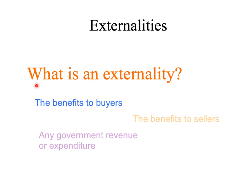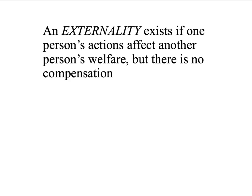In particular, we're going to talk about what an externality actually is. Here is our definition: an externality exists if one person's actions affect another person's welfare, but there is no compensation. In other words, the effect on another person's welfare occurs outside the market transaction.